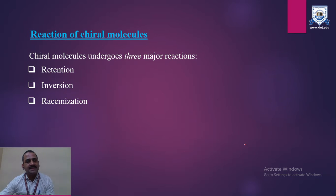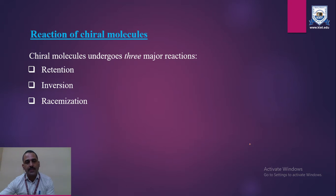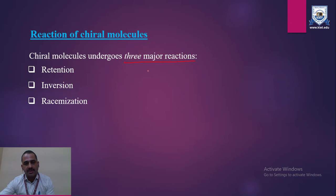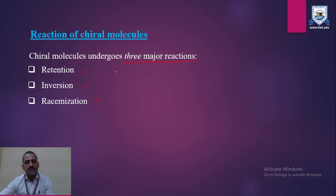Now we are considering the reaction of chiral molecules. If any molecule has a chiral center, which type of reaction will it generally produce? Chiral molecules generally undergo three types of major reactions: the first one is retention, another one is inversion, and the third one is racemization. We will cover all the reactions one by one.